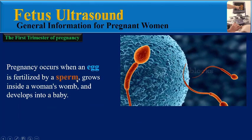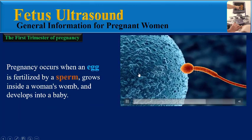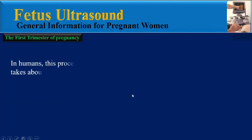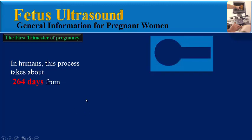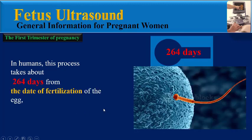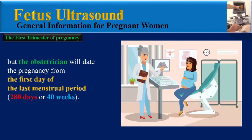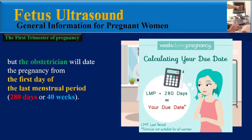Pregnancy occurs when an egg is fertilized by a sperm, grows inside a woman's womb, and develops into a baby. In humans, this process takes about 264 days from the date of fertilization of the egg. But the obstetrician will date the pregnancy from the first day of the last menstrual period — that is 280 days or 40 weeks.